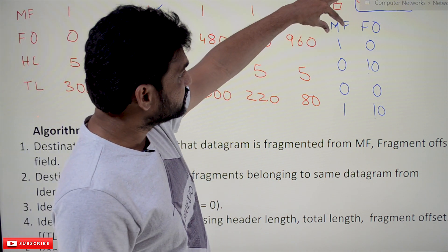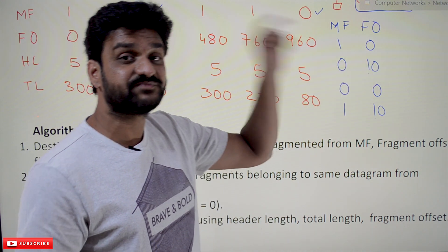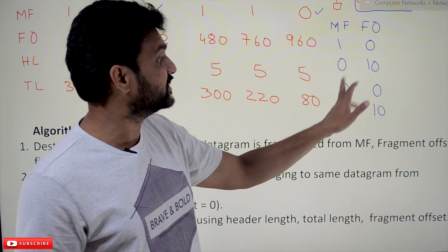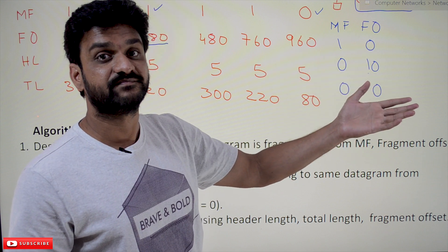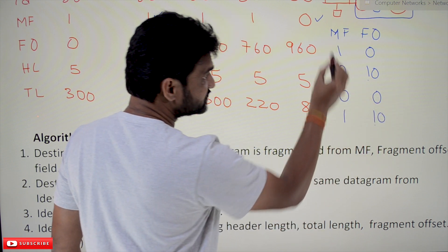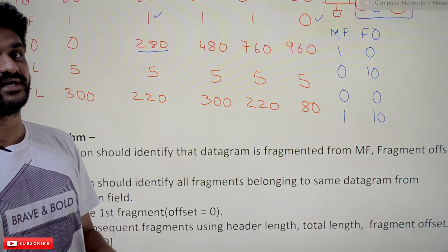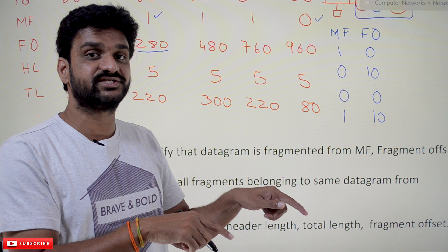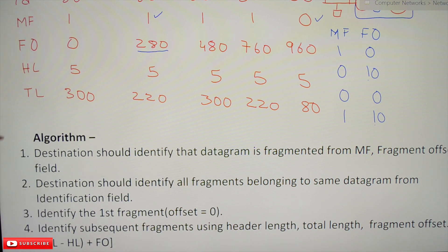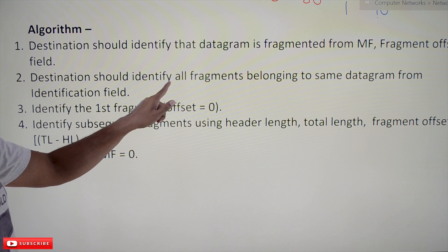MF equal to 1 and fragment offset equal to zero means there are further packets — the datagram sent by the sender has been fragmented. The other condition also states that fragmentation has happened. However, MF equal to 0 and fragment offset also equal to zero means fragmentation has not been done. That decision has to be made by the destination using MF and fragment offset.